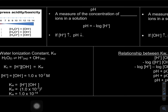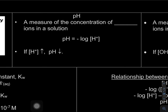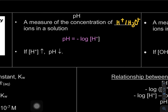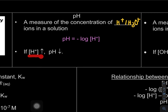Now the definition of pH: pH is actually a measure of the concentration of ions in the solution — either H⁺ or H₃O⁺. pH is equal to negative log [H⁺]. If H⁺ concentration is high, the pH will be low, because of the negative sign in the formula.